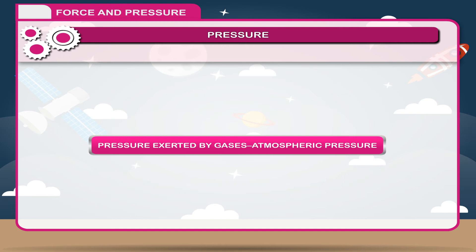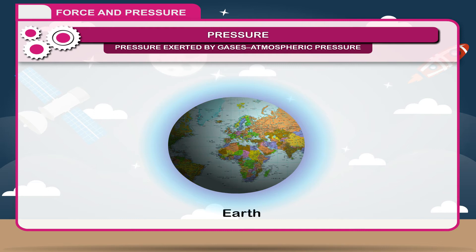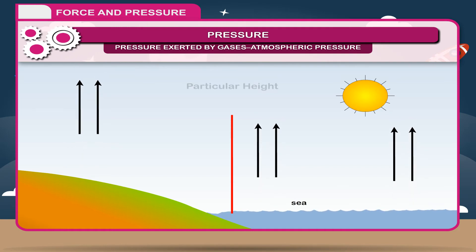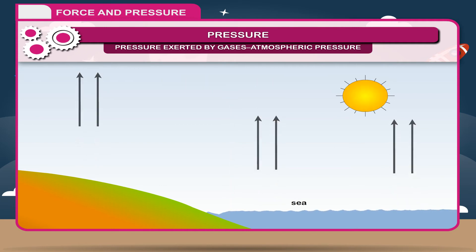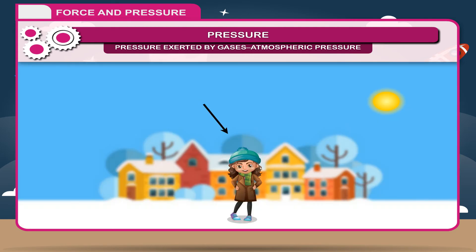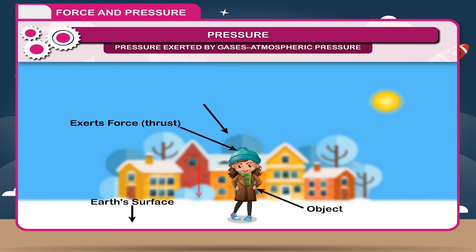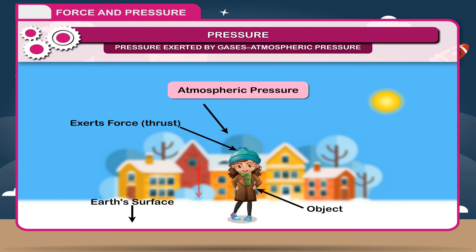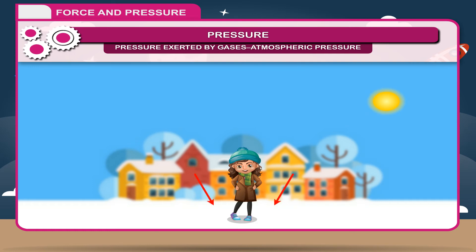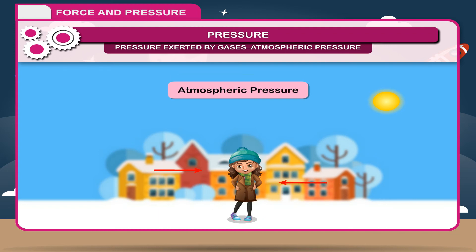Atmospheric pressure: The layer of air around the earth is called the atmosphere. As we move up, the density of the layers of air continues to decrease until it reaches zero, beyond which there is no atmosphere. Since air has mass, it exerts force (thrust) on the earth's surface and on all objects. This thrust acting on unit area of the earth's surface is called atmospheric pressure. In the SI system, the value of atmospheric pressure is 1 lakh Newton per meter squared, or 1 lakh Pascal. This is a tremendous amount of pressure, which our body pressure balances.